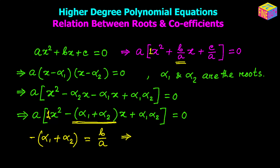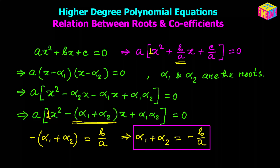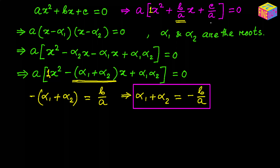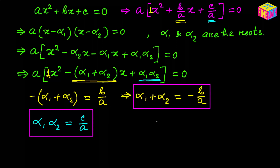From here we can say that alpha sub 1 plus alpha sub 2 equals negative b over a. Then if we compare the constant term between the two forms, in the first form we have positive c over a and in the second form we have alpha sub 1 times alpha sub 2. So we can say that alpha sub 1 times alpha sub 2 equals positive c over a. For the quadratic equation, the sum of the roots is negative b over a and the product of the roots is positive c over a.